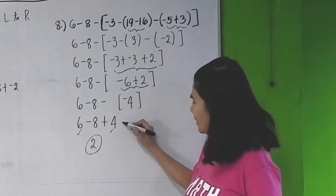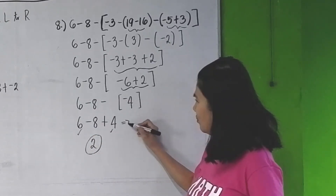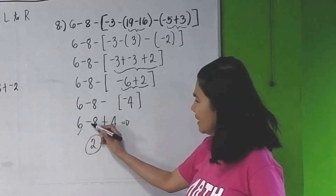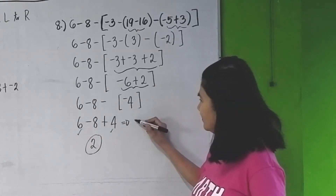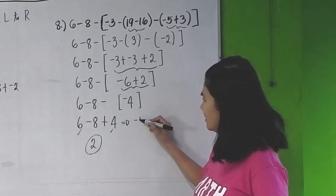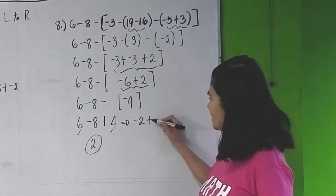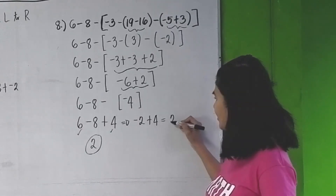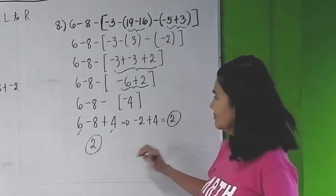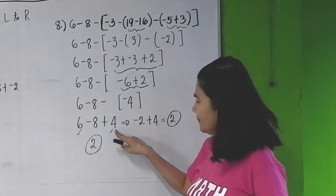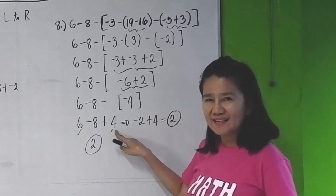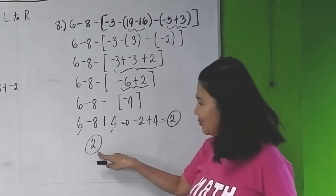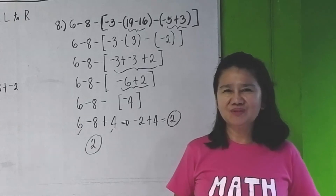If you don't go that way, you can add 6 minus 8 first — that gives negative 2 plus 4, which still gives you 2. Either way the answer is 2.